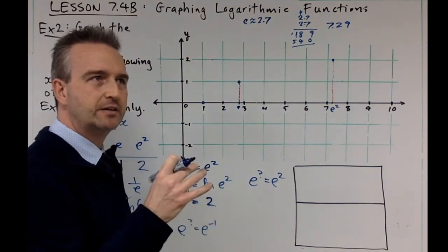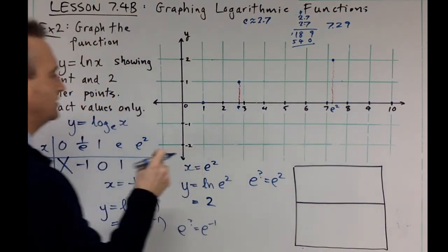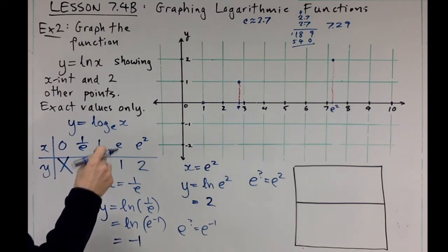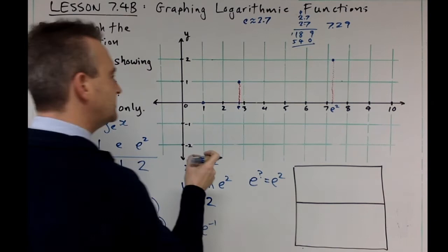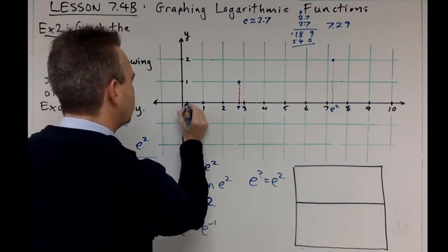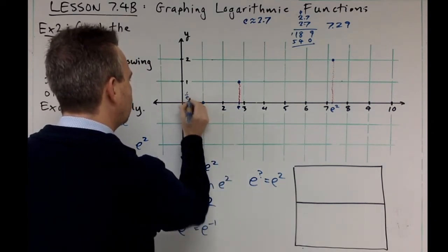One over e is... well, e's kind of close to 2.5 or close to three, so it could be like a quarter or a third, about that range there. So that's like one over e there, and it's going to come down to minus one.